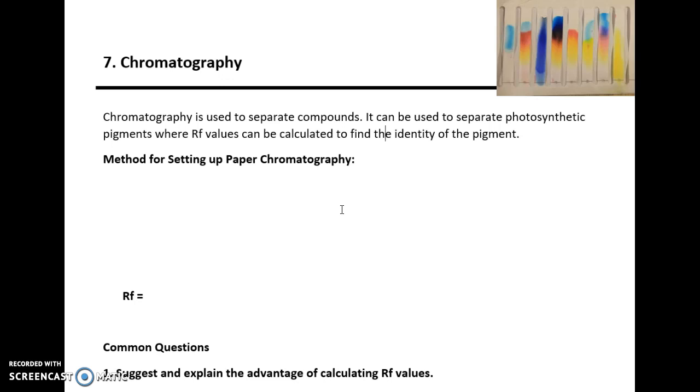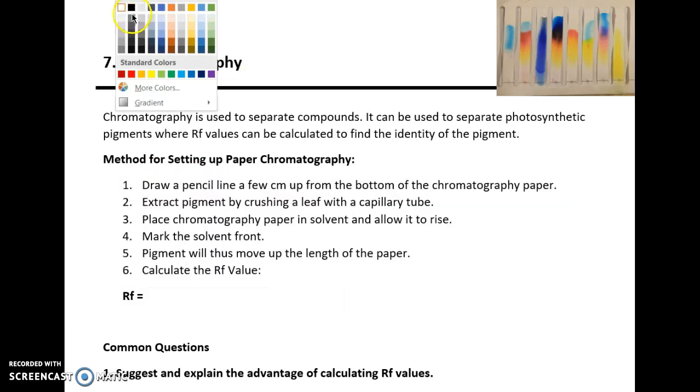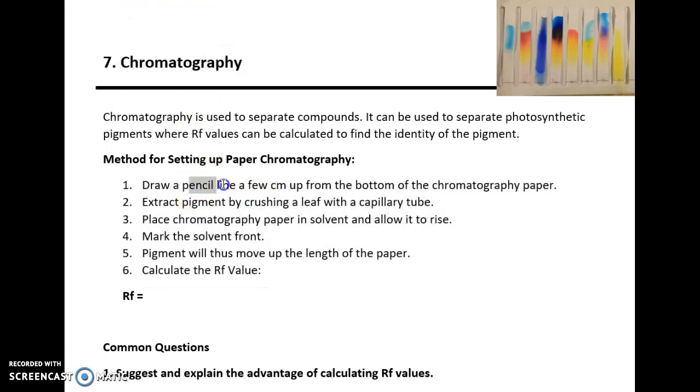For paper chromatography, the standard method is as follows: Draw a pencil line a few centimeters from the bottom of the chromatography paper. Using the context of the leaf, extract pigment by crushing leaf with a capillary tube. Then the chromatography paper needs to be placed inside the solvent to allow the solvent to rise along the paper.